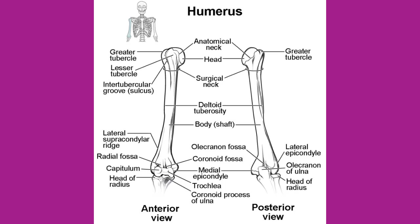The distal end of the humerus has two articulation areas which join the ulna and radius bones of the forearm to form the elbow joint. The more medial of these is the trochlea, a spindle or pulley-shaped region that articulates with the ulna bone. Immediately lateral to the trochlea is the capitulum, a knob-like structure located on the anterior surface of the distal humerus, which articulates with the radius bone of the forearm. Just above these bony areas are two small depressions that accommodate the forearm bones when the elbow is fully bent or flexed.